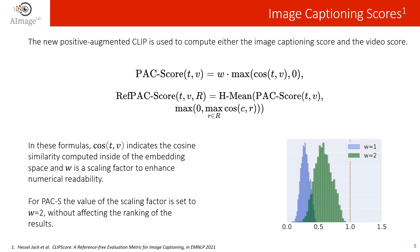The novel Positive Augmented CLIP model is employed to compute both the image captioning score and the video score. Starting from a trained embedding space, an evaluation metric for image captioning can be defined by simply scaling the similarity computed inside the embedding. We use the approach from the CLIPScore paper, where cosine of t and v indicates the cosine similarity computed inside the embedding space, and w is a scaling factor — set equal to 2 in our case — to enhance numerical readability. To include reference ground-truth captions, we compute the representation of each reference caption using the textual encoder and then compute the harmonic mean between the reference-free score and the maximum cosine similarity between the candidate caption and all reference captions.